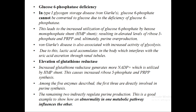Elevation of glutathione also plays a role. Increased glutathione levels cause more NADP+ to be utilized by the HMP shunt pathway, causing increased ribose-5-phosphate and PRPP synthetase activity, further driving purine overproduction.